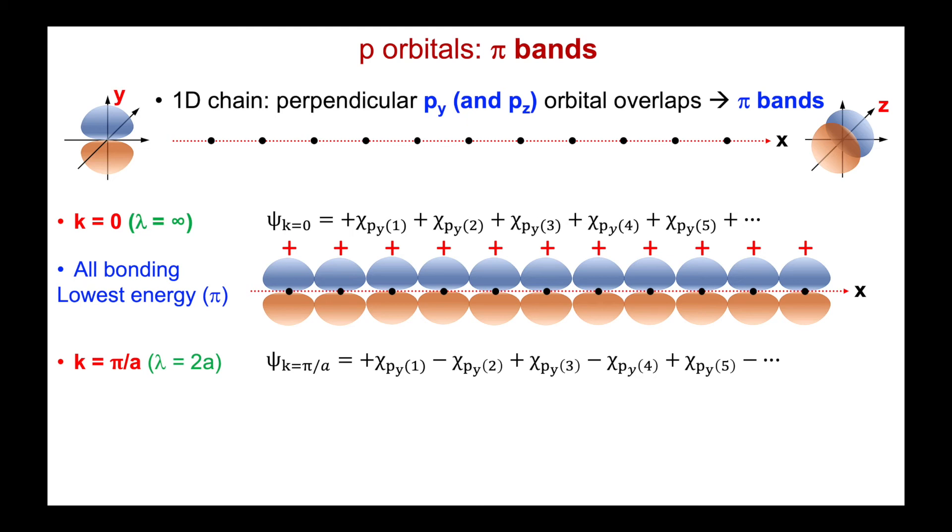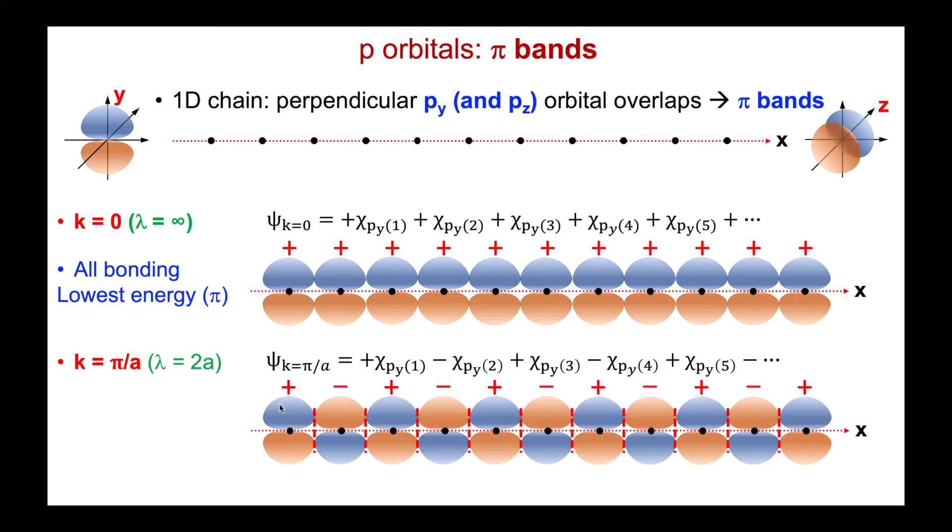Now we'll go to k is pi over a. So we have alternating signs for the contributing atomic orbitals. We are switching the phases as I go from one atom to the next. And we see in this case then that will give us an anti-bonding interaction, because I switched the phases. And that's going to be the case between every single atom. And so for these pi interactions for the p orbitals, k equals pi over a, I'm going to have the highest possible energy, because everything is anti-bonding. And so we'll call that pi star. Again, the way the band is running from an energy point of view, it will be the same as we had for the s orbitals. It will run uphill.